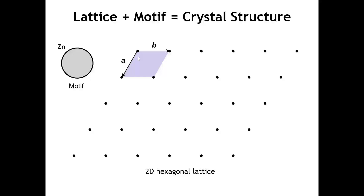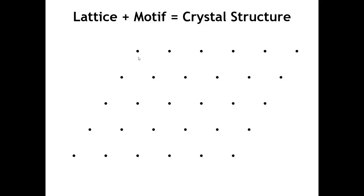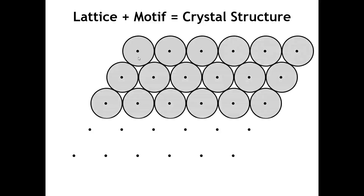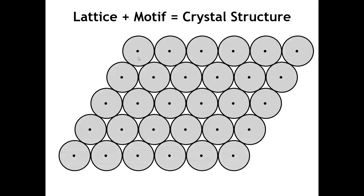Placing a zinc atom on each lattice point and filling in the structure gives us this pattern, which would ideally extend infinitely in both directions. This is the closest packing of spheres in two dimensions, producing a hexagonal arrangement. We'll come back to this in the next lecture when we discuss the structures of metals.